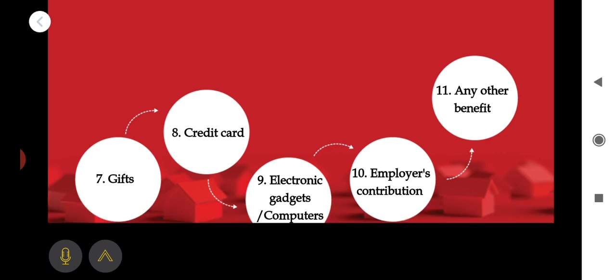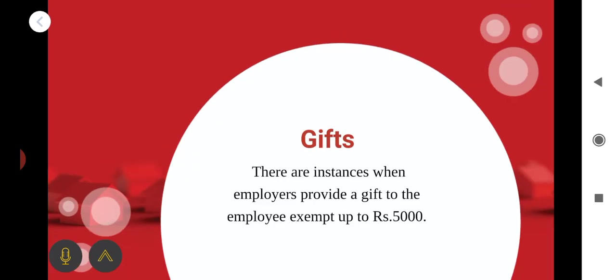First one: gifts. Any gift provided by the employer to the employee — these are instances when the employer provides a gift to the employee — is exempted up to the amount of rupees 5,000. More than that, it will be taxable. Next: credit cards. Any amount expended for credit cards — expenditure incurred by the employer in respect of credit cards used by the employee — will be considered. Amount recovered from the employee may be deducted. Actual expenditure incurred will be considered as the taxable portion of perquisites.